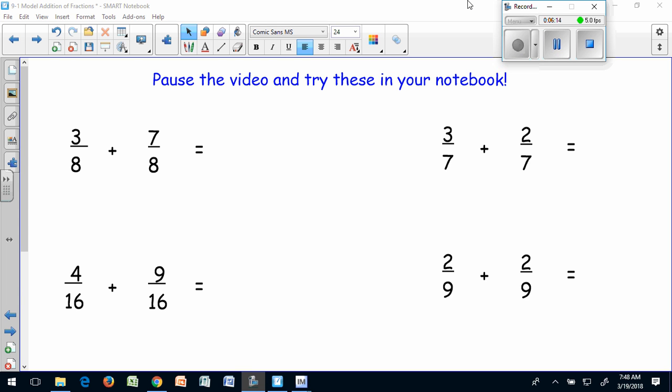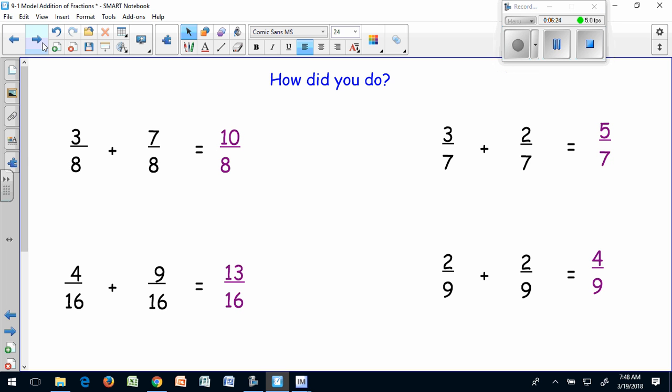Let's pause the video and try these four problems in your notebook. After adding all four equations, you should have three eighths plus seven eighths equals ten eighths. Three sevenths plus two sevenths equals five sevenths. Four sixteenths plus nine sixteenths equals thirteen sixteenths, I'm sorry. And two ninths plus two ninths equals four ninths. Great job!